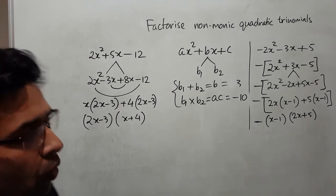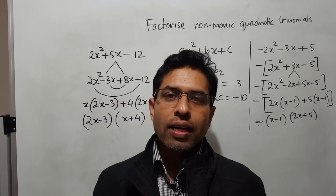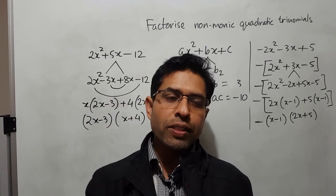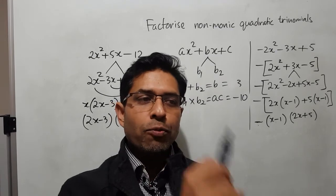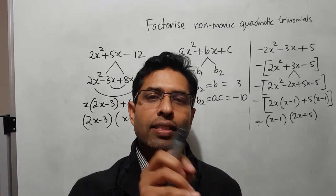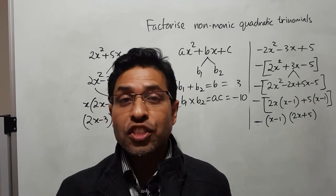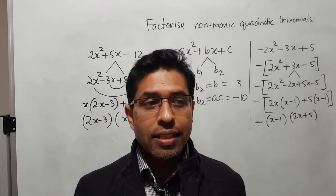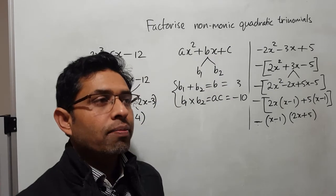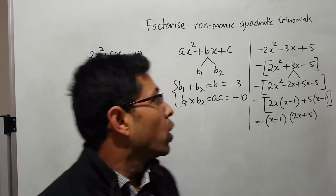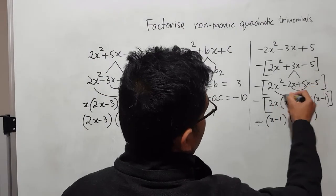That's all about non-monic. What we are learning here is that it doesn't matter if it is monic or non-monic — the one principle we have to fulfill is both conditions: break the middle part b into b1 and b2 such that b1 plus b2 equals b, and b1 times b2 equals ac.